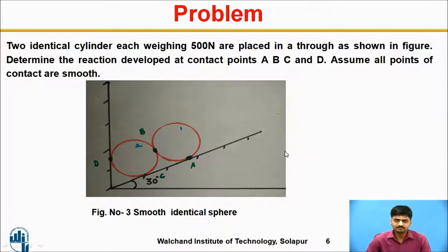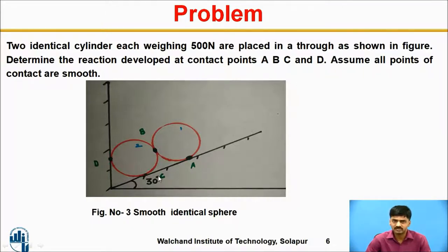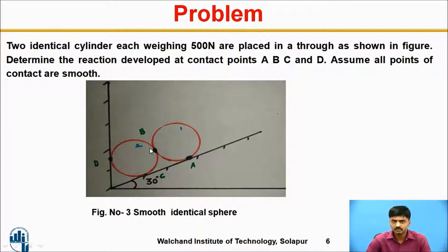Let us discuss the problem. Consider two smooth identical cylinders, each weighing 500 newtons, placed in a trough as shown in the figure with an inclination of 30 degrees with respect to horizontal. Determine the reactions developed at contact points A, B, C, and D. All points of contact are smooth, meaning we consider them frictionless.